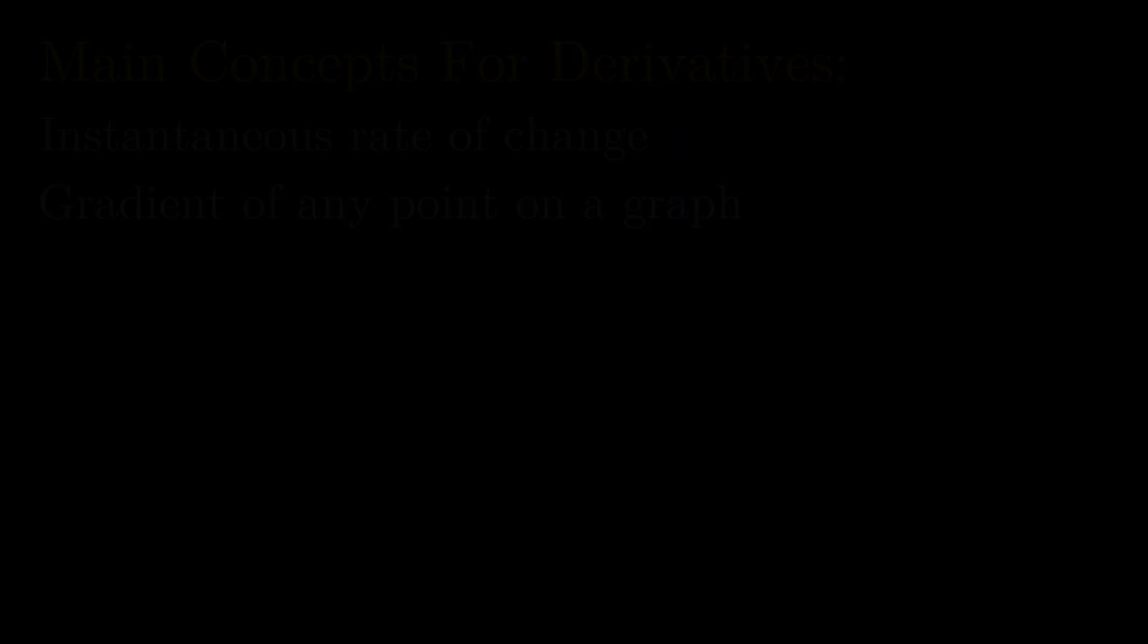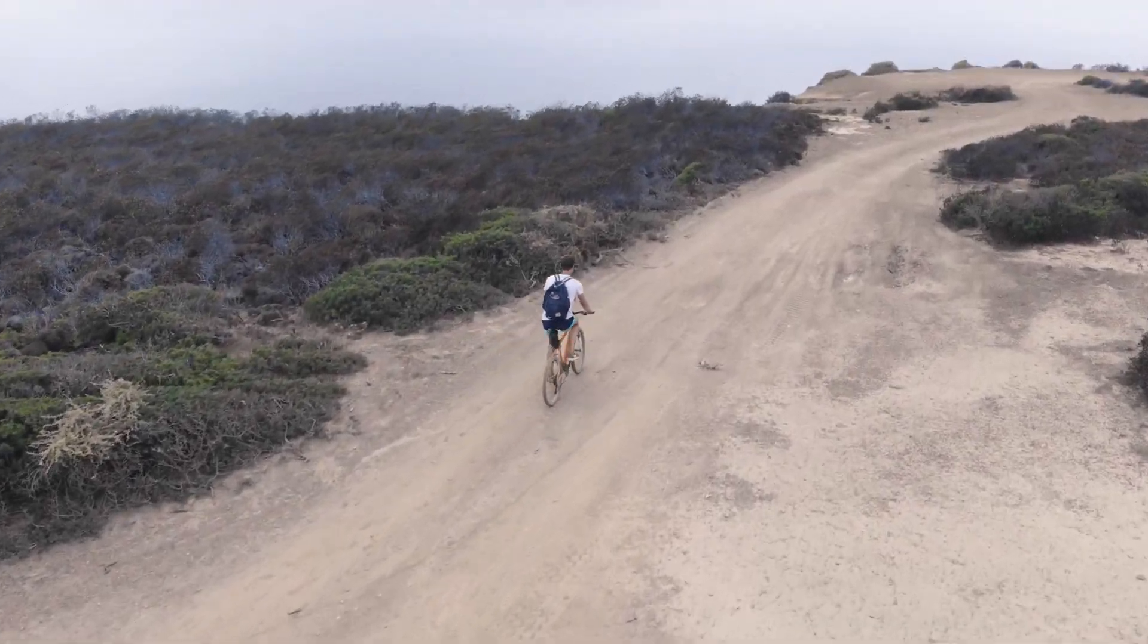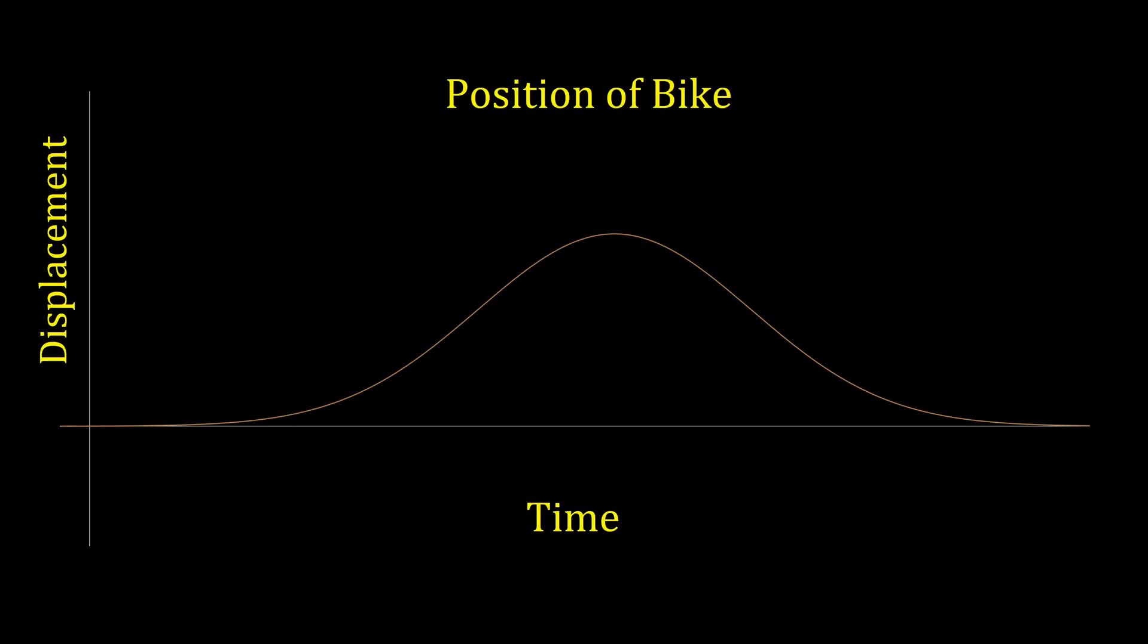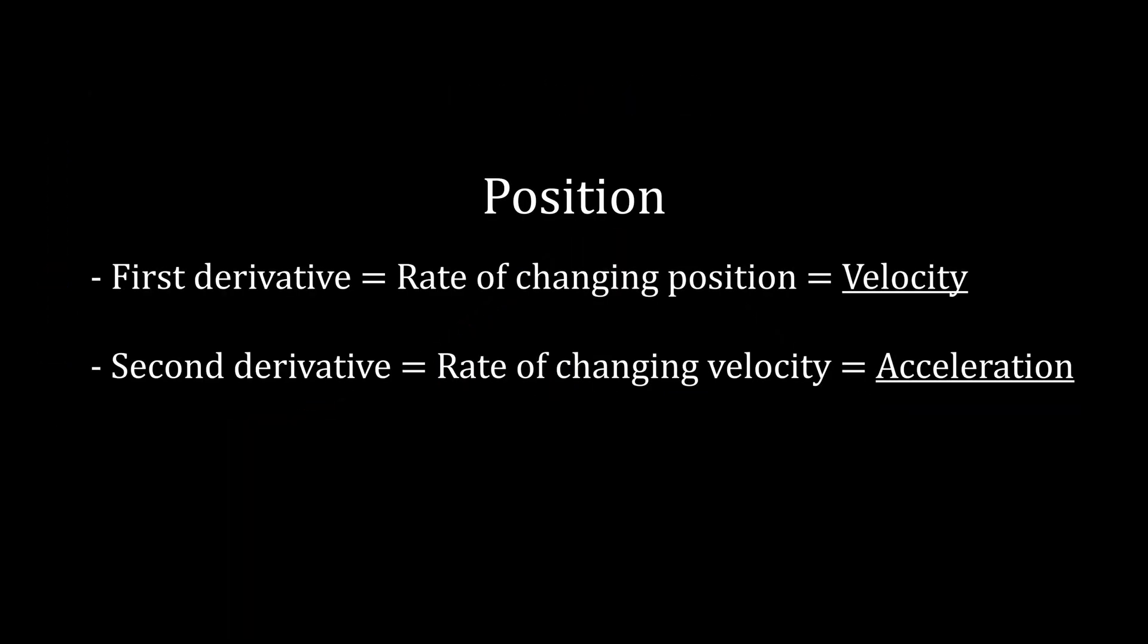Derivatives are super useful too. One popular application is to physics. Let's suppose we have a situation with a bicycle riding along a road. If we found the derivative, or the gradient, at any point of the journey, we'd be finding the rate of change of the position, or in other words, the velocity. If we found the derivative again, we would find the rate of change of that changing velocity, and we would end up with the acceleration of the bicycle.